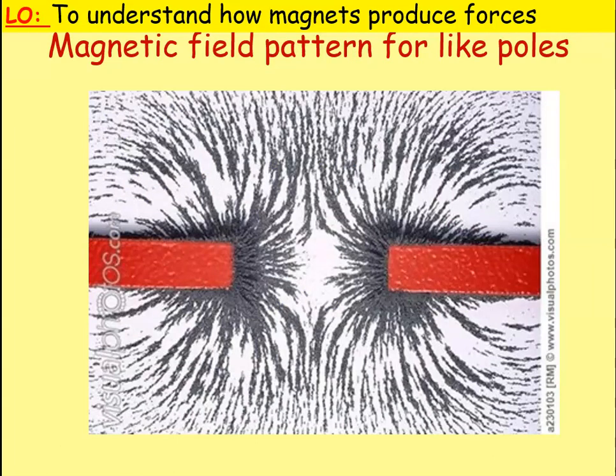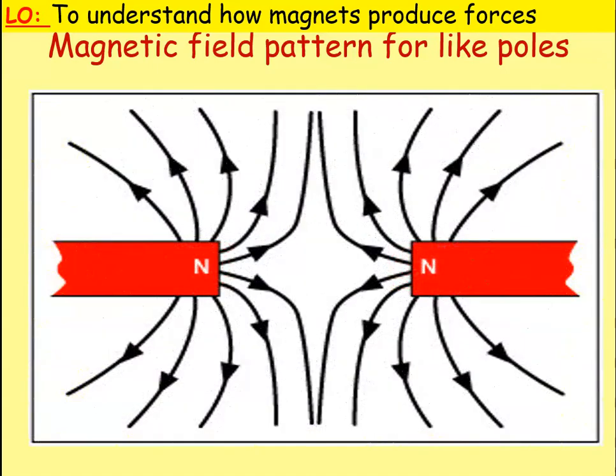Now, what does the magnetic field look like when we place two like poles together? Imagine two north poles — we've placed iron filings around them and we can see those field lines clashing in the centre. The field lines aren't continuing through; they're pushing up against each other. The diagram shows field lines emerging from the north but clashing and pushing upward when they meet. Please pause the video to draw that field diagram.